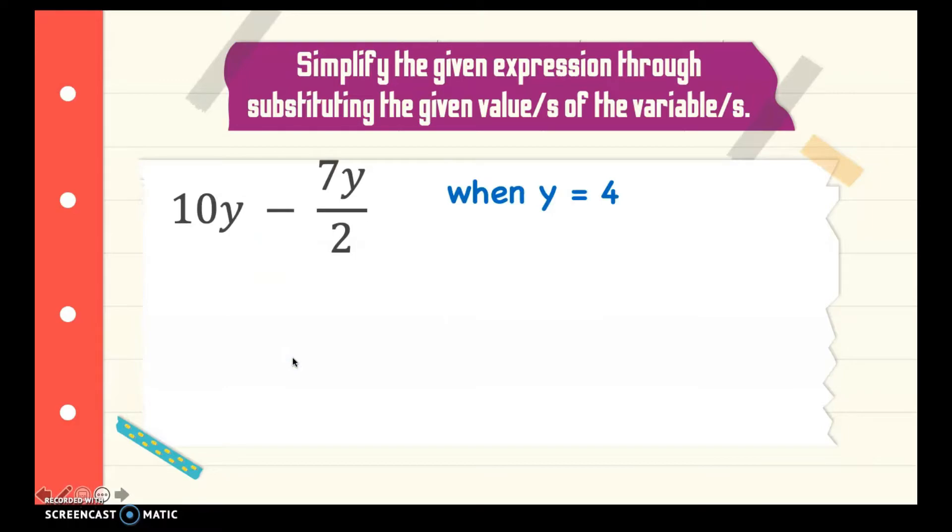Next, we have 10y minus 7y divided by 2. What is the value of the expression when y is equal to 4? You replace y to 4. For the 10y, we multiply 10 times 4. Then, minus 7 times 4 because this is multiplication 7 and y. 7 times y and the y is 4. Then, divide it with 2.